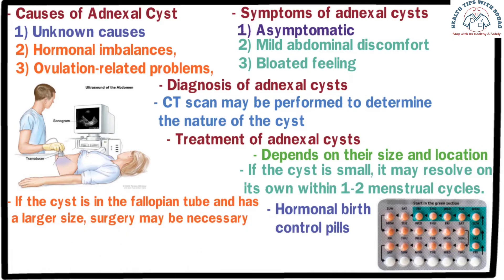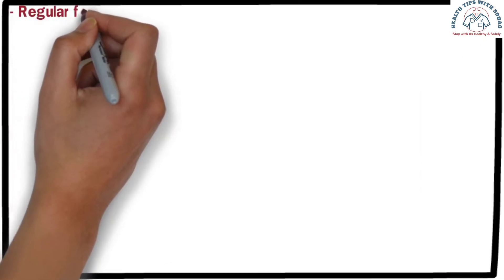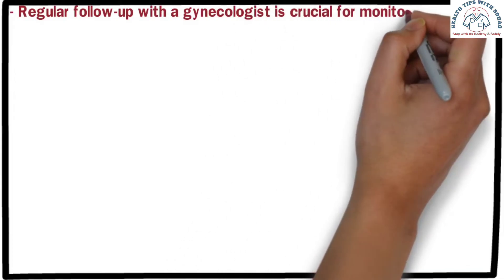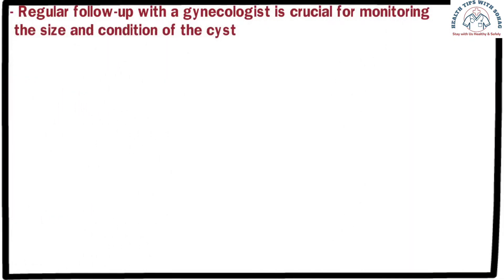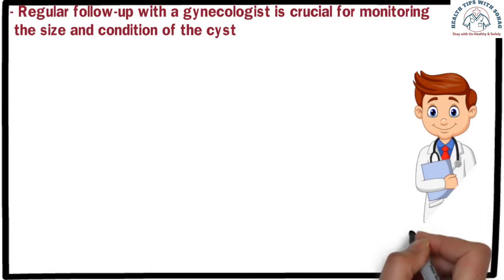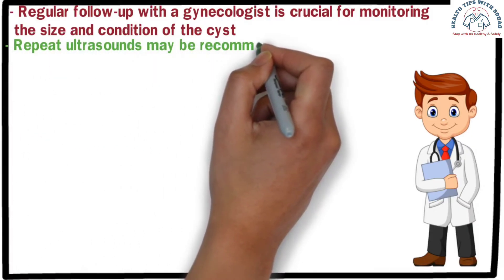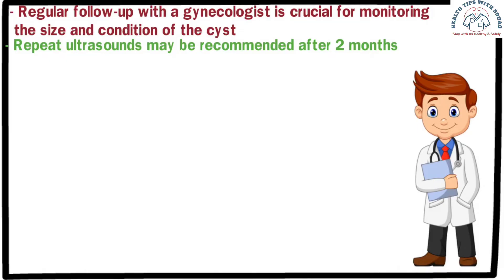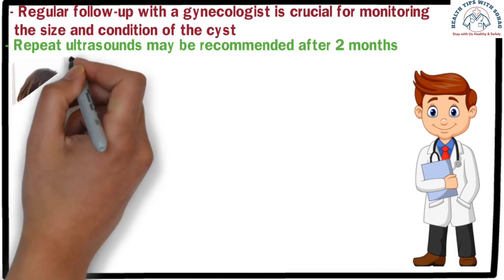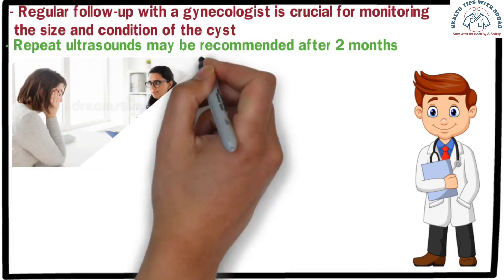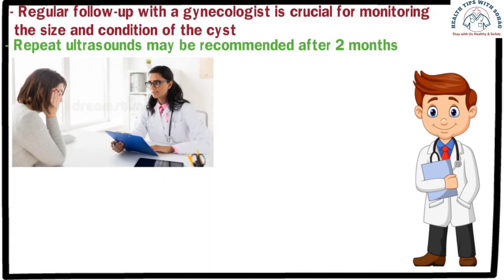Surgery is especially indicated if the cyst poses a risk of causing problems in the tube. Regular follow-up with a gynecologist is crucial for monitoring the size and condition of the cyst. If an ultrasound report indicates adnexal cysts, it is important to consult a gynecologist for further evaluation. A repeat ultrasound may be recommended after two months to assess whether the cyst has grown in size.